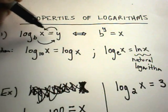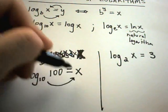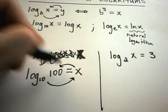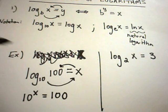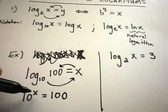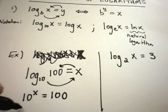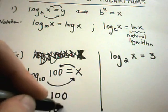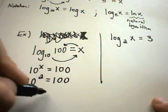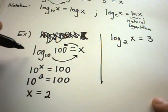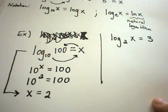So, b raised to the y equals x. We can use that same little pattern here. It says 10 raised to the x is going to have to equal 100. And be careful, don't say x equals 10 because it's not multiplication, but x in this case is an exponent. So, 10 squared is what equals 100 because 10 times 10 is 100. So, that means that our x value is simply 2. So, all that means is log base 10 of 100 is just a fancy way for writing the number 2.